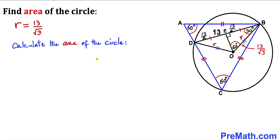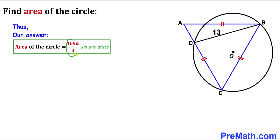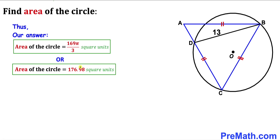Now for the final step: calculate the area of the circle with radius r = 13/√3. Using the formula Area = πr², the area equals π times (13/√3)² = π times 169/3 = 169π/3 square units, which is approximately 176.98 square units. Thanks for watching — please subscribe for more exciting videos!